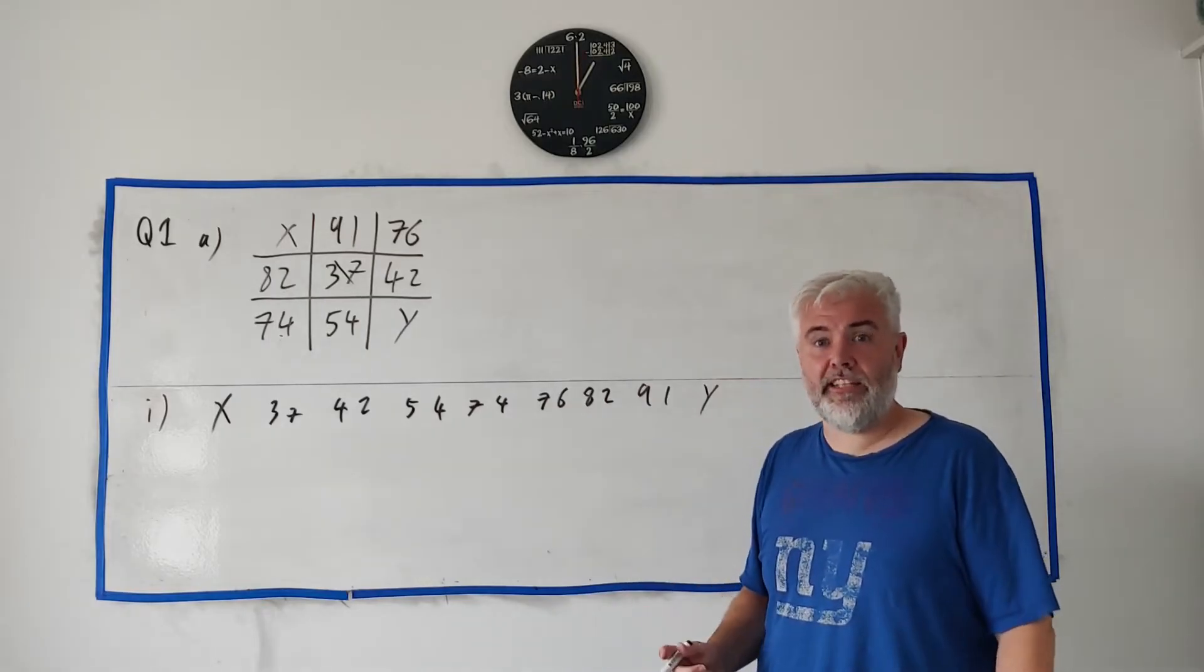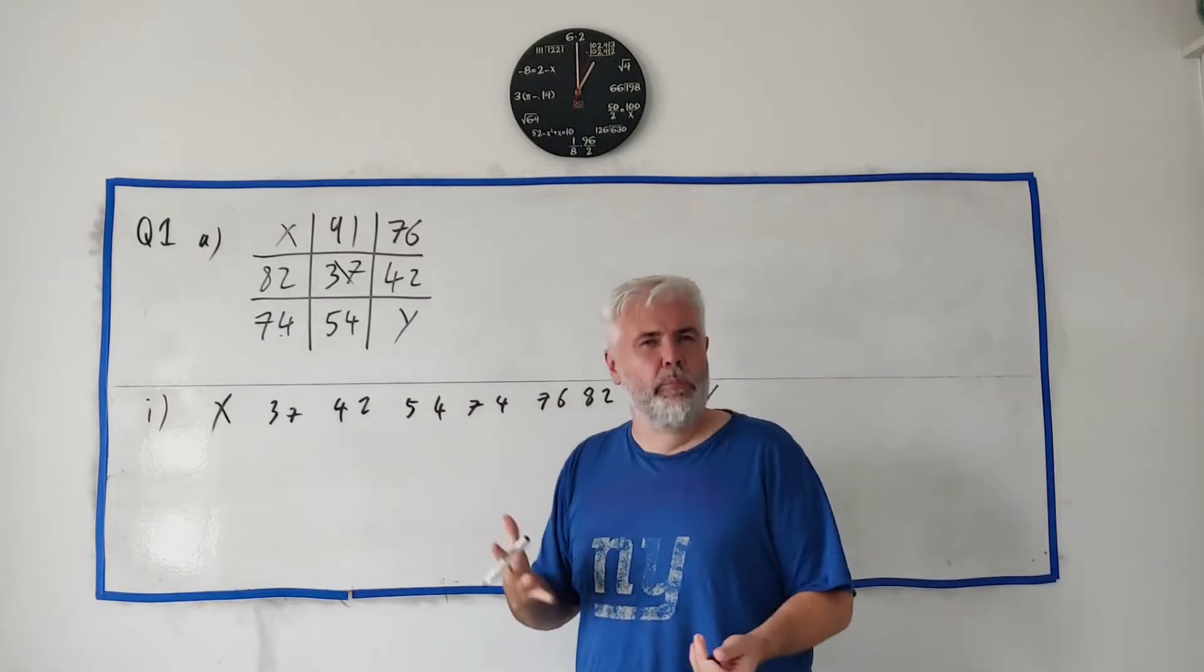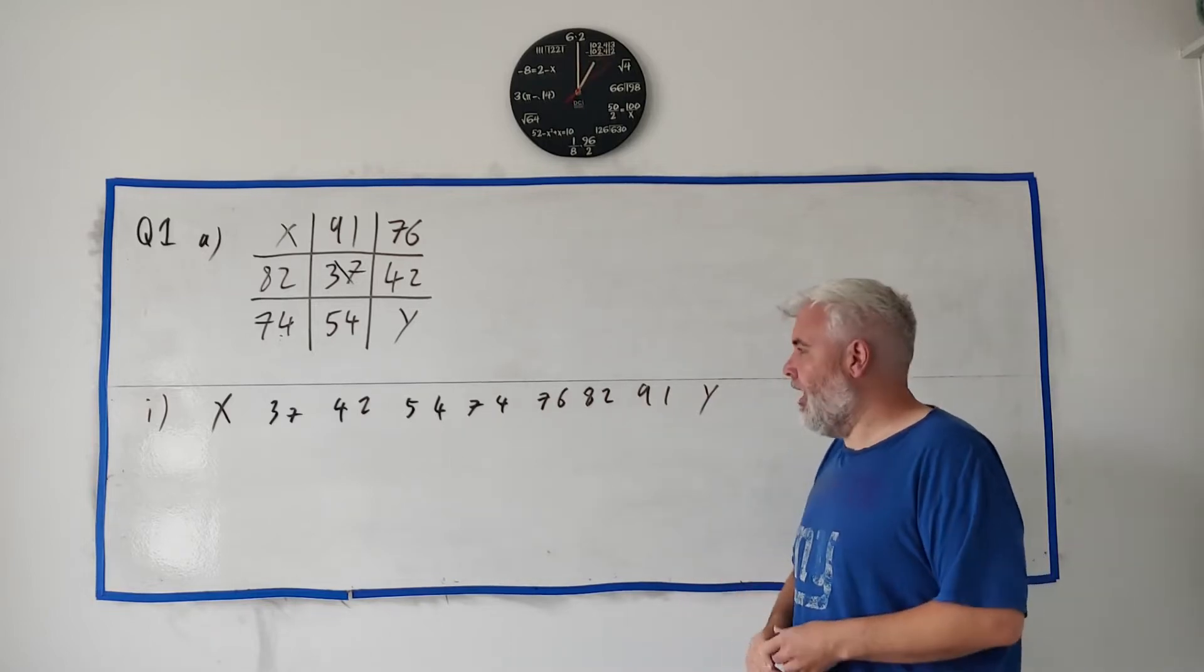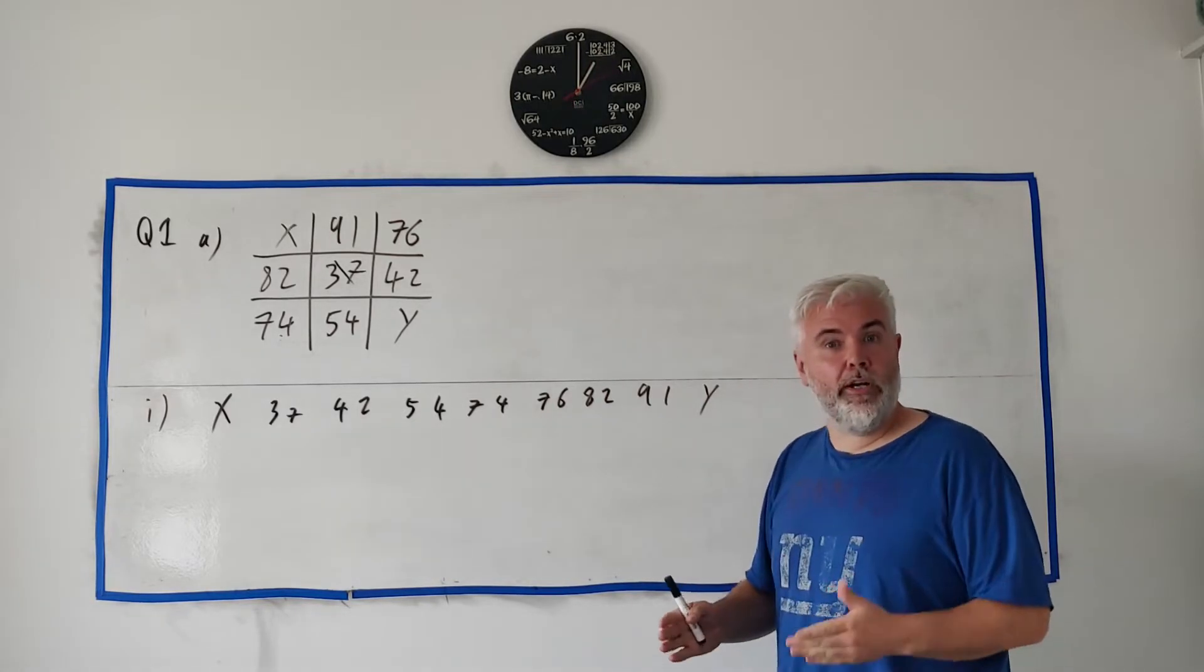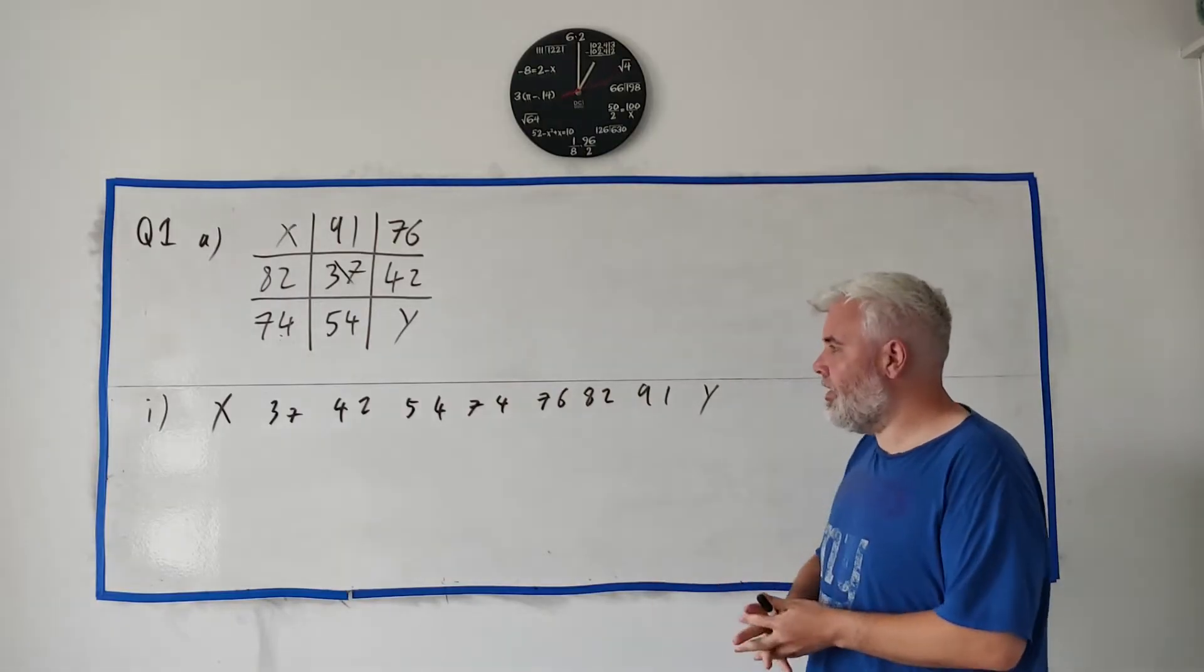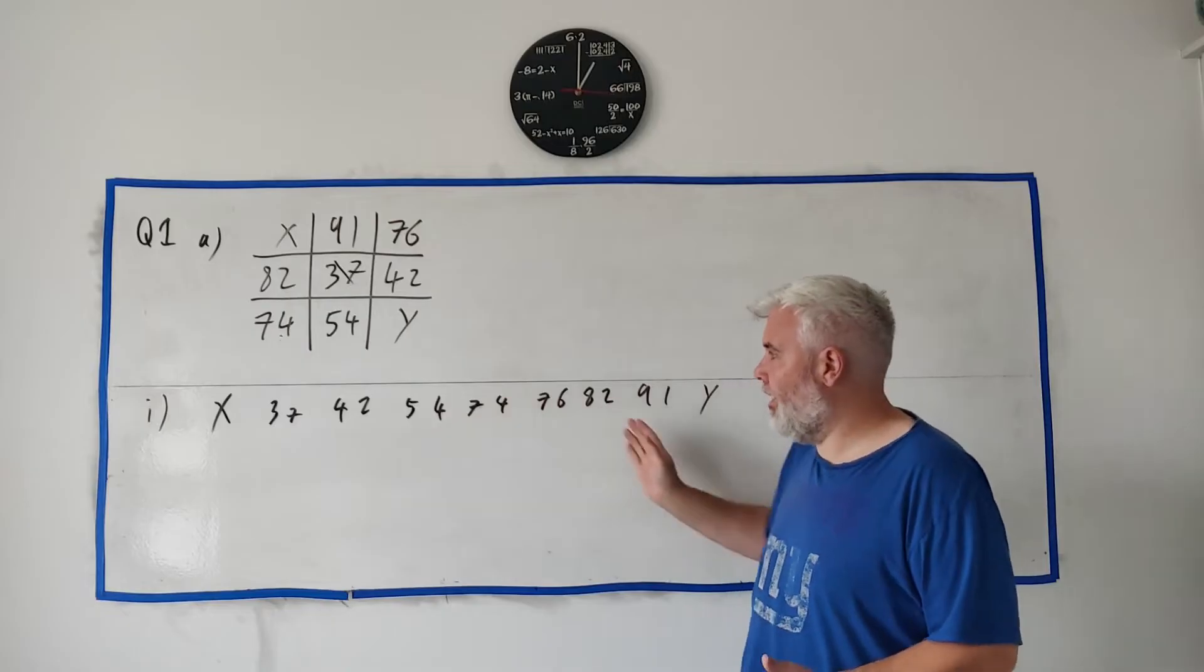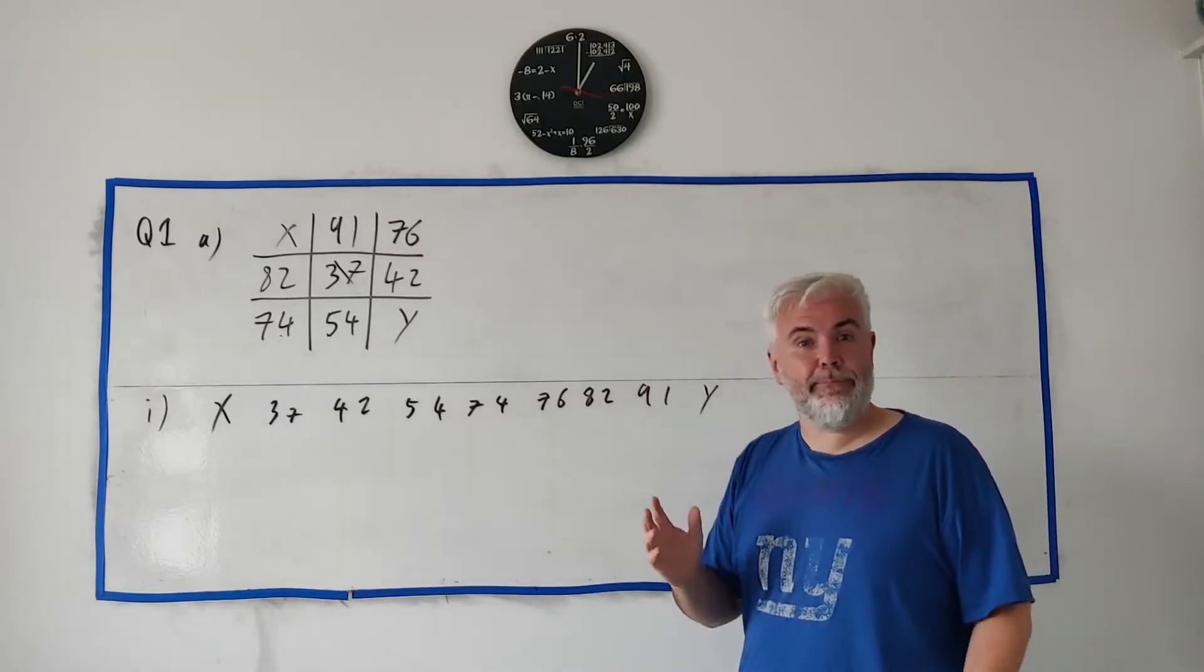Part two of this question asks you to find the median. So now we're into a bit of maths here. What's the median number? The median is an average and it's the one where it's just the middle. So if we write down numbers in order, like they are here, smallest to largest, the median is simply the one in the middle.